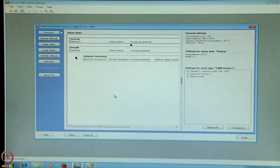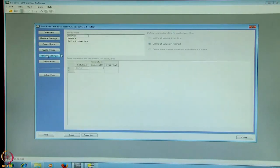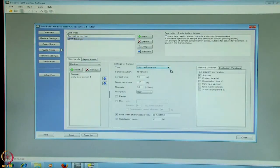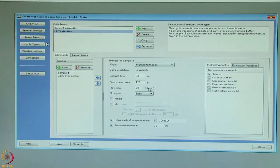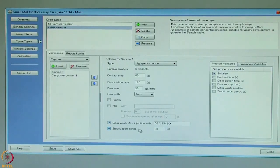We now see how a small molecule kinetic template is set up. Similarly, here as well we have the startup, we have a sample flown at least once on the surface and a solvent correction with 8 different solvent correction points set here. Here also in the variable setting or in the cycle type, we go to the low molecular weight kinetic wizard. Check that the type is high performance. Contact time is 60 seconds. Dissociation time is 120 seconds. Flow rate at 30 microlitre per minute. Flow path both. So, extra wash with 50% DMSO. Stabilization time of 30 seconds is provided here.